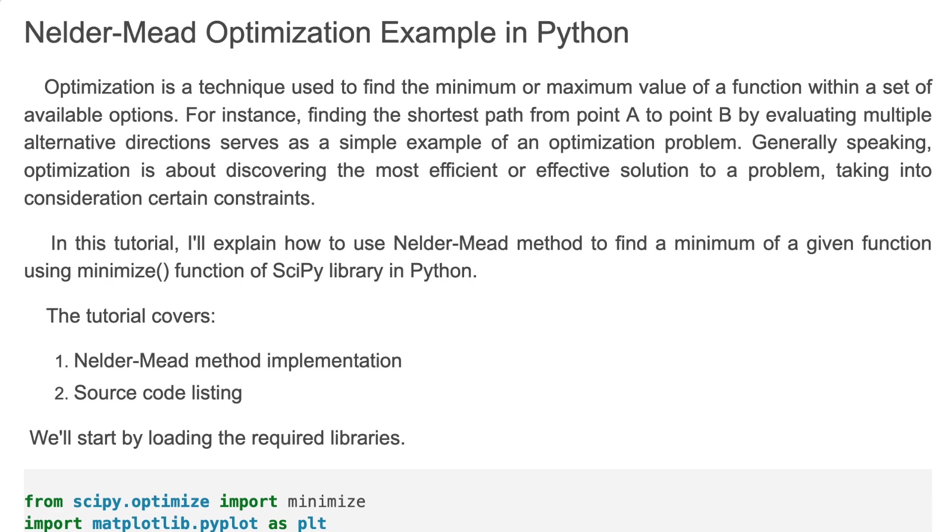Optimization is a technique used to find the minimum or maximum value of a function within a set of available options. For example, finding the shortest path from point A to point B by evaluating multiple alternative directions serves as a simple example of an optimization problem.